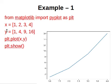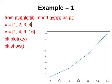X is the list [1, 2, 3, 4] and Y is the list [1, 4, 9, 16]. This means the first point is (1,1), the second point is (2,4), the third point is (3,9), and the fourth point is (4,16). So I have four points. We will represent each point and they will be joined by a line to form a line graph.